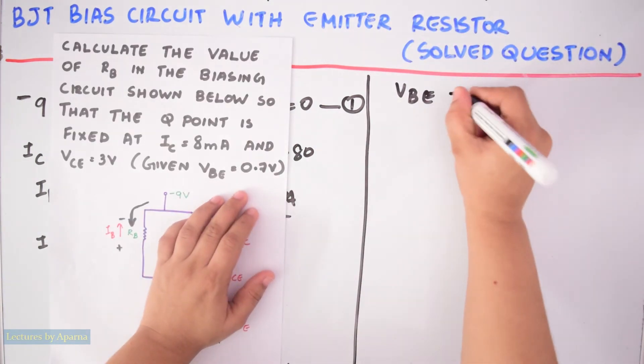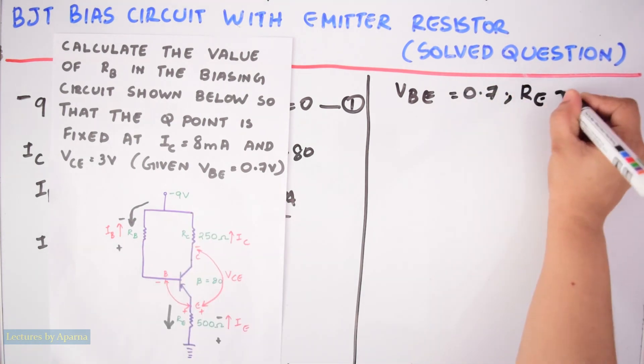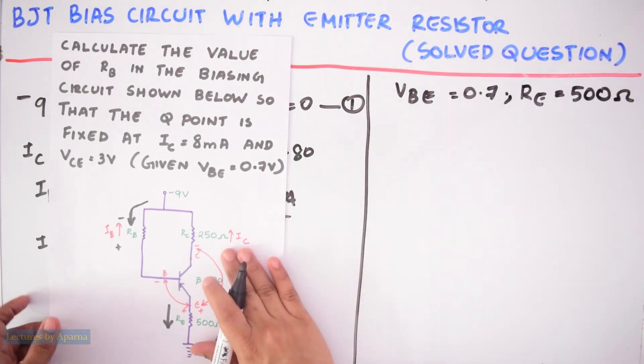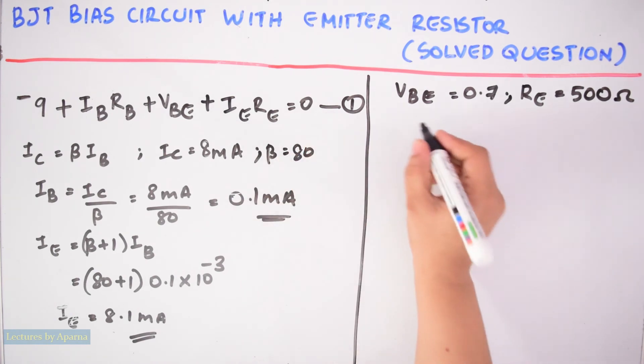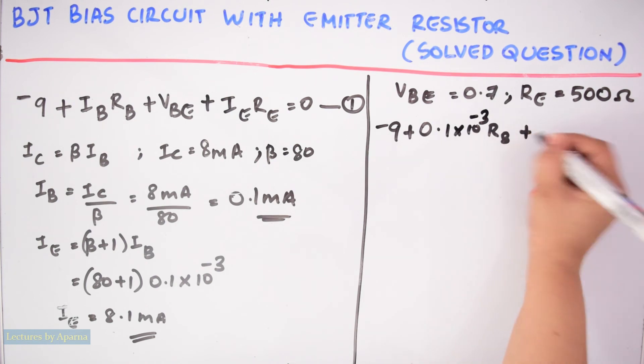Given that VBE is equal to 0.7 and RE is equal to 500 ohm. Substitute these values in equation 1. That is in this equation.